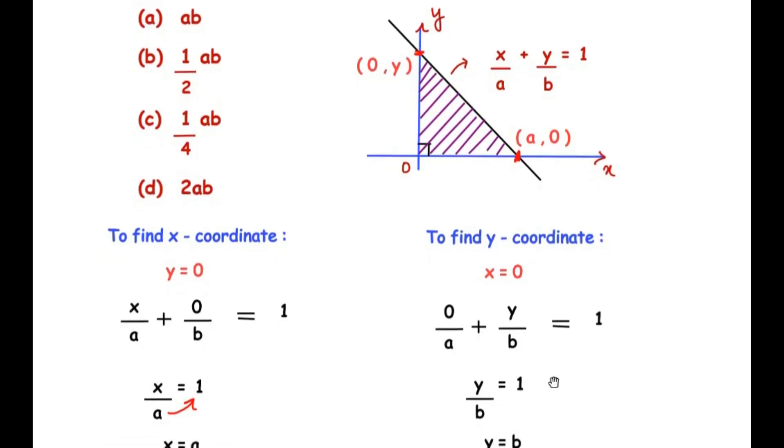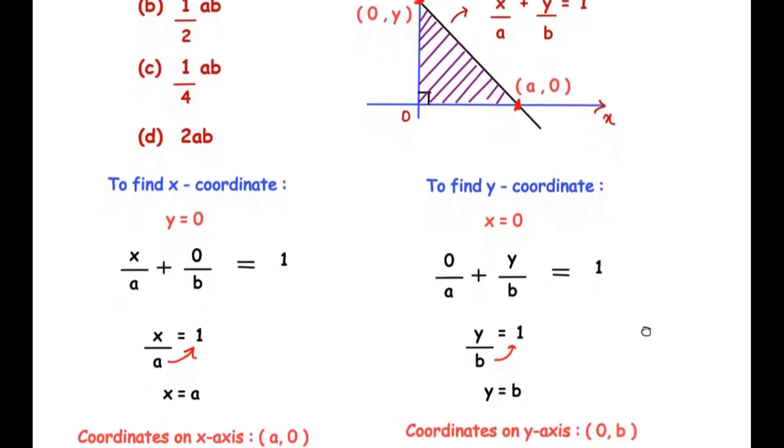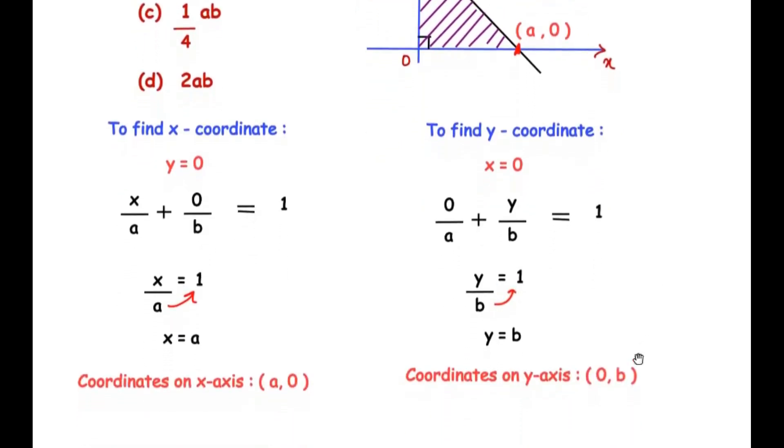So again, 0 divided by a is 0 itself, so this equation simplifies as y over b equals 1. Or, taking b on the other side of the equals sign, b multiplies with 1, giving us y equals b. So the coordinates on the y-axis are going to be (0, b). So let us make the changes again. So here we have shown (0, b).